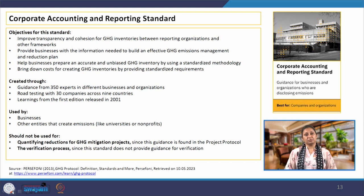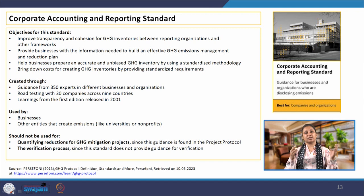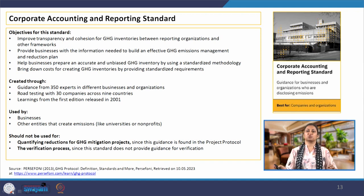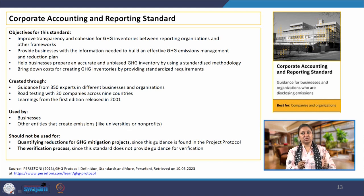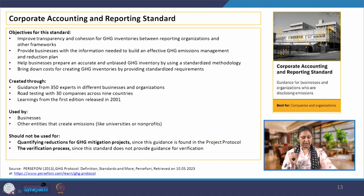For example, if I have to report the GHG emissions of IIT Roorkee as a business entity, all this standard will help is in reporting, measuring, quantifying and reporting. I will have to start from identifying the activities which are emitting, knowing the inventories for that, and putting all the inventories together. We will come to this part when we start with scope 1, 2 and 3 emissions. But this particular standard does not help us in quantifying reductions for GHG mitigation projects — it is for regular businesses.